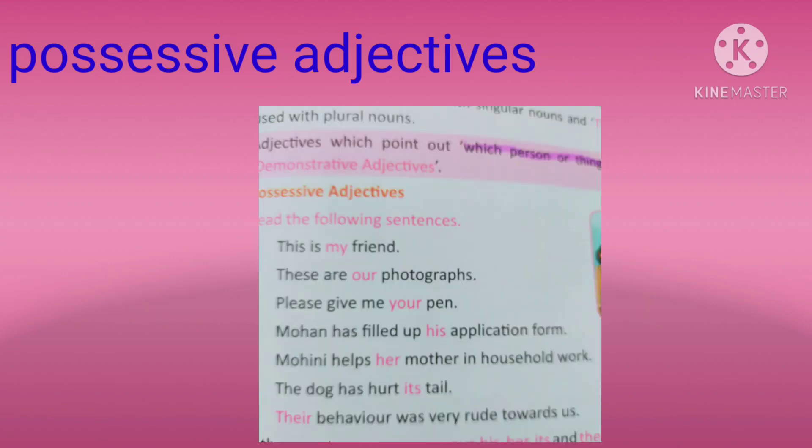Now look at the sentences given below. In these sentences, the letters written with pink, that is our, your, his, her, its, and their are possessive adjectives.